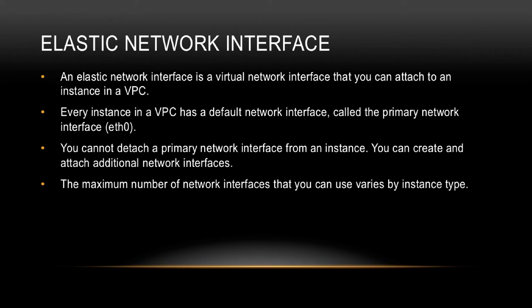Primary network interfaces cannot be detached from the instance. However, we can create and attach additional network interfaces. The maximum number of network interfaces that can be attached to an EC2 instance depends on the instance size. I'm going to be leaving a link in the description of this video with information on how many interfaces can be attached — it depends on the instance size.